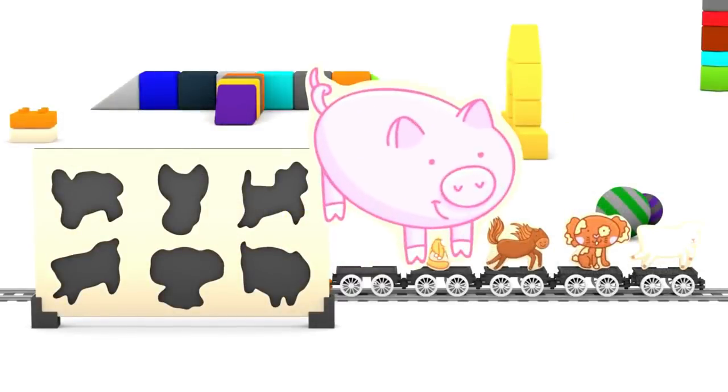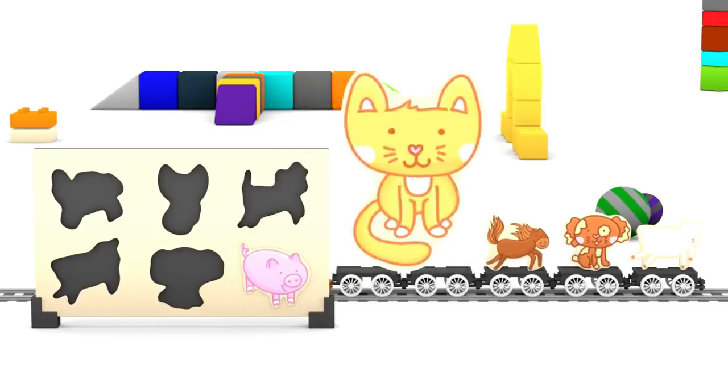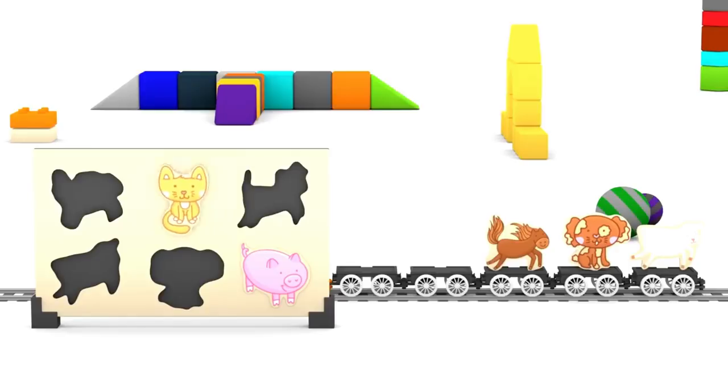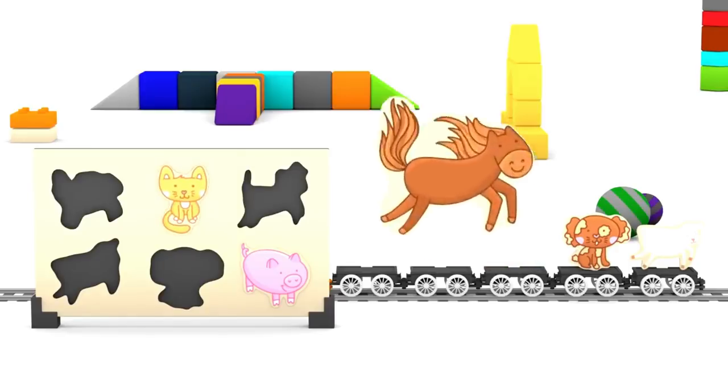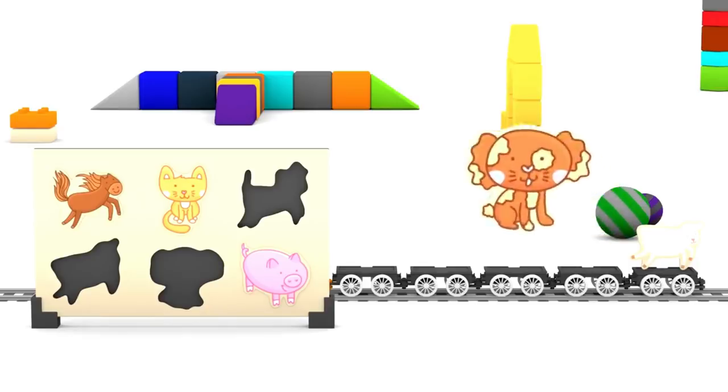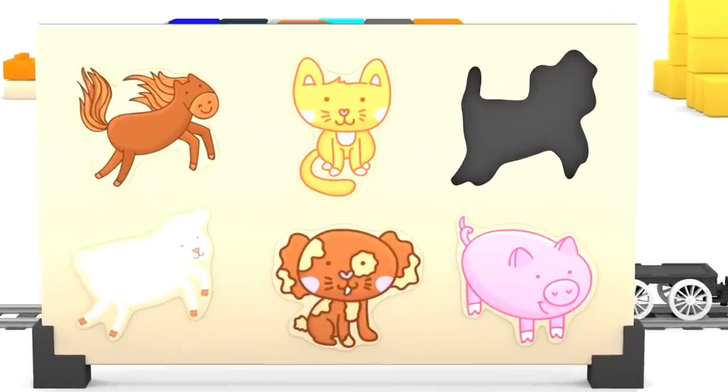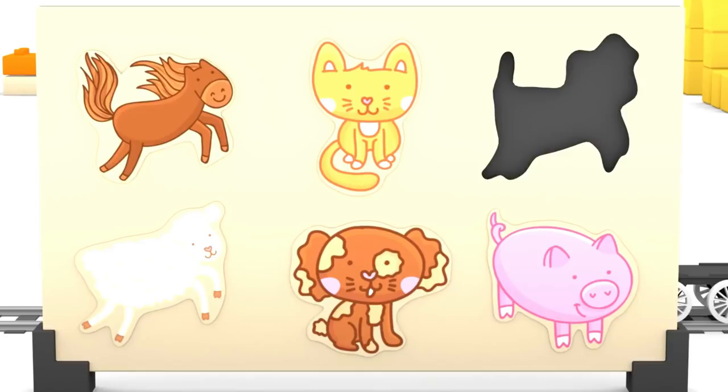Let's put the animal jigsaw pieces into their places, shall we? The monkey, the pig, the cat, the horse, the dog and the sheep. But can you see an animal is missing?